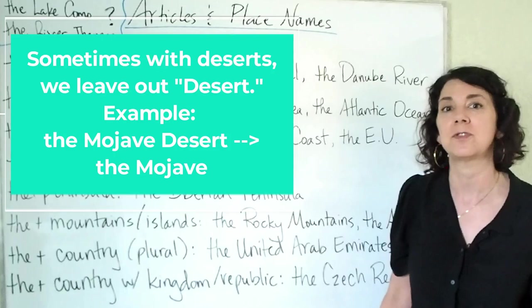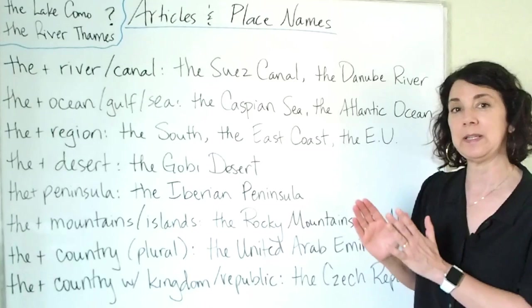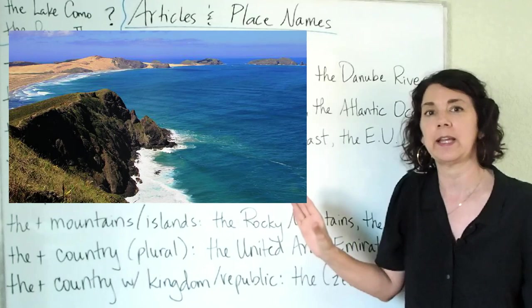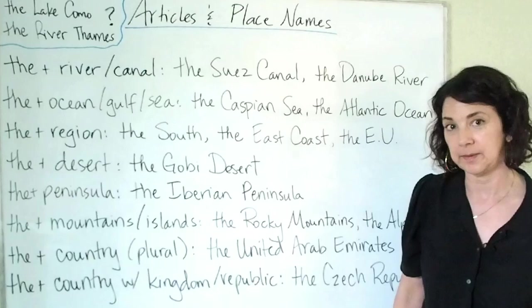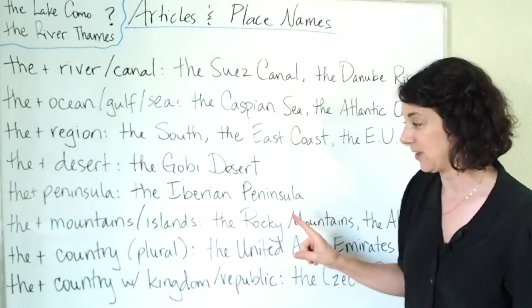The next rule is 'the' with the word peninsula. A peninsula is a piece of land that comes out into the water, connected to land on one side — surrounded by water on three sides. For example, the Iberian Peninsula. Next, we use 'the' with mountains and islands if it's a group. For example, the Rocky Mountains or the Alps.